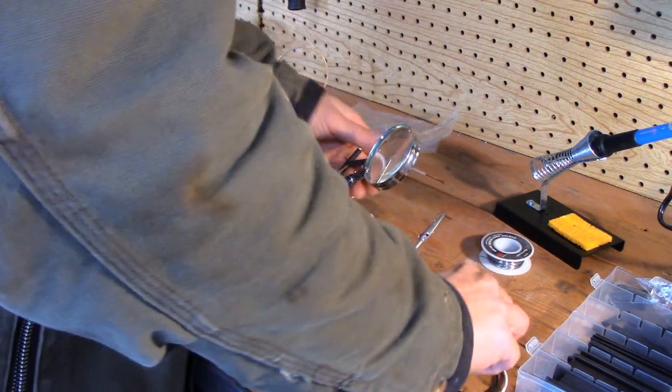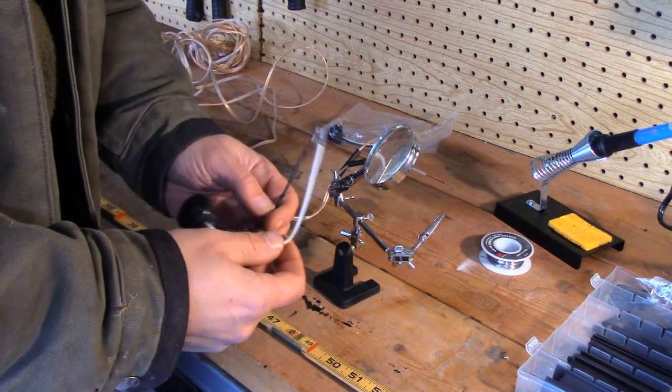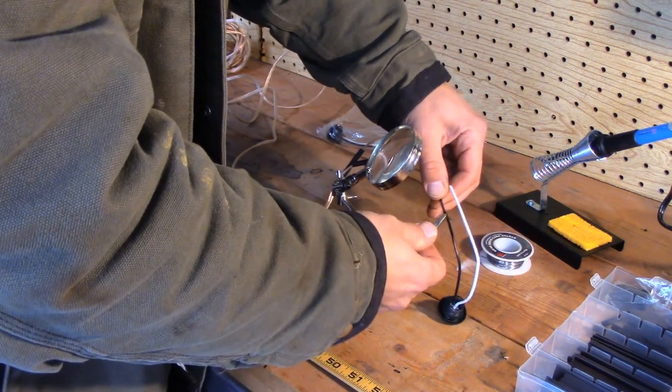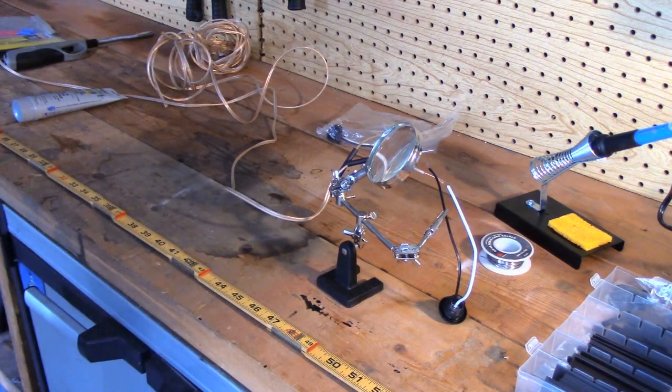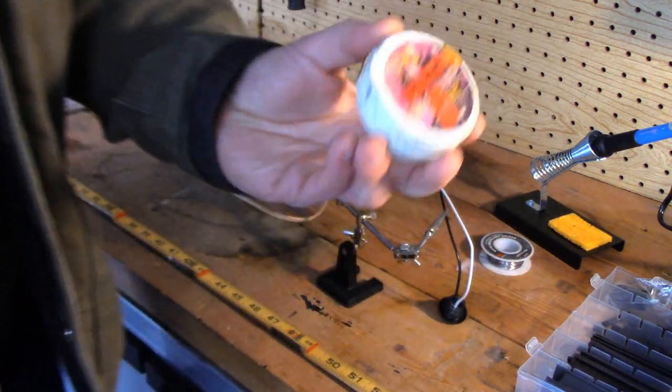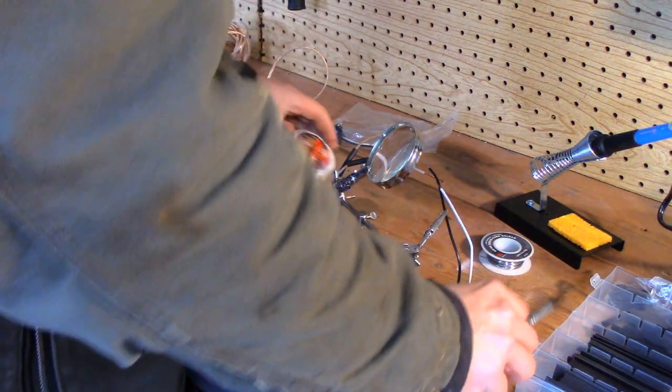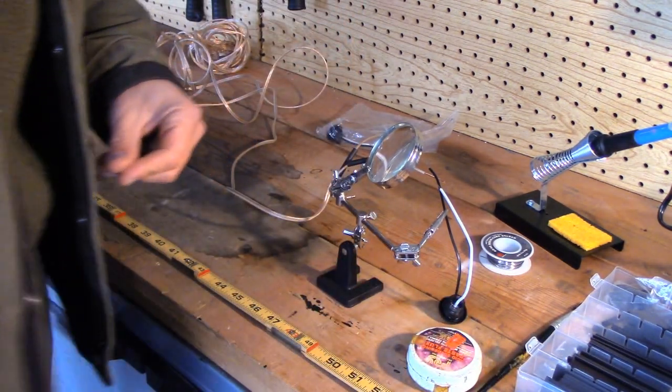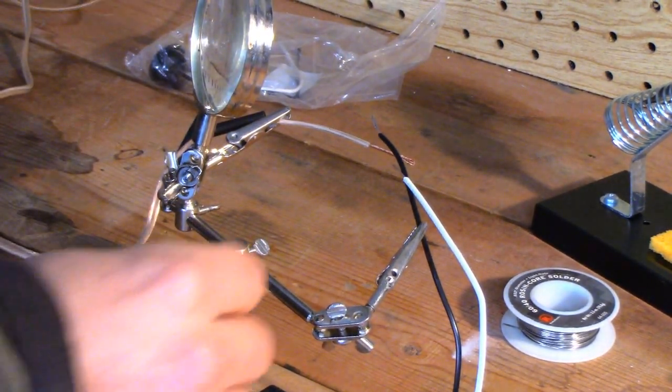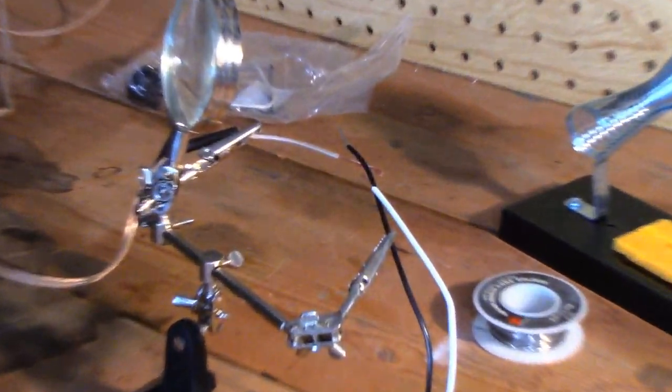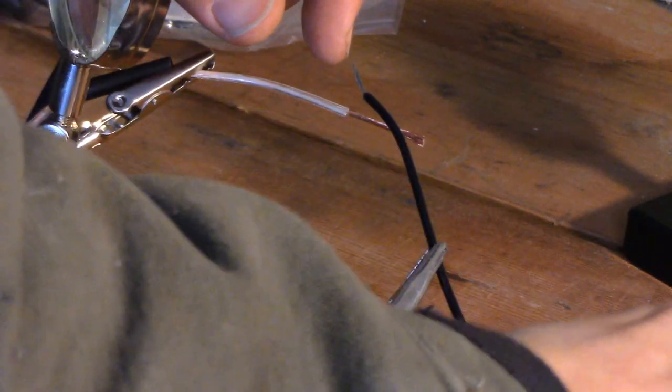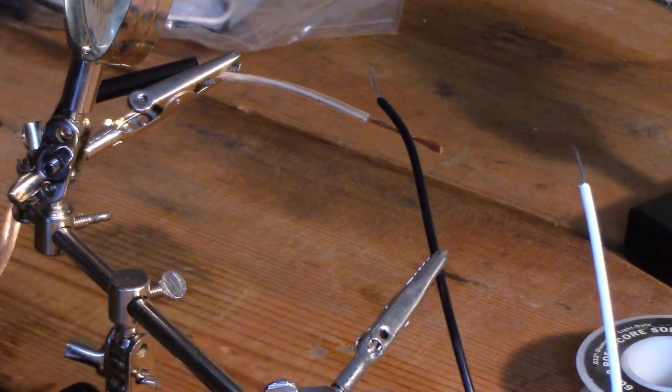We're just going to slide it down over each of these. And the reason we're doing this is it's going to help protect our connection and keep the water out of there if water were to ever get up in the grill. Next thing we're going to do is we're going to create the solder connection. So we're going to do one of these at a time. One of the things I forgot to mention in the stuff you'll need, I use paste flux when I'm soldering just to kind of get a better solder.